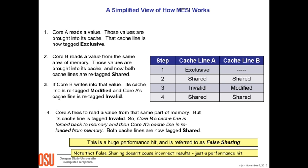Let's make up a scenario. We'll say we're looking at two cores. Core A reads a value. At that moment, the core A L2 cache pops up and says its state is now exclusive. So in step one, cache line A is exclusive. Cache B doesn't have a state yet — it's null because we haven't done anything. But there's code running on core B, and it's now going to read a value from the same area of memory. Those values are brought into its own cache, and now both cache lines are re-tagged — cache line A is now shared, and cache line B is now shared.